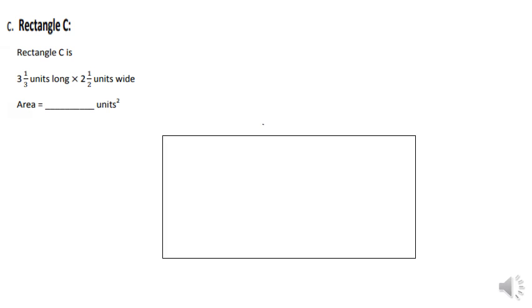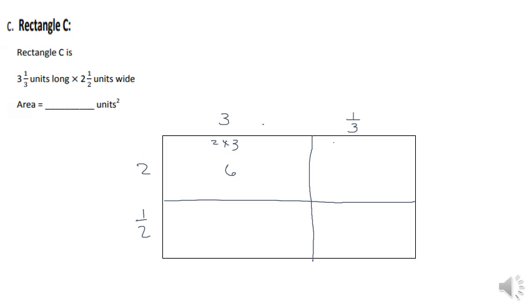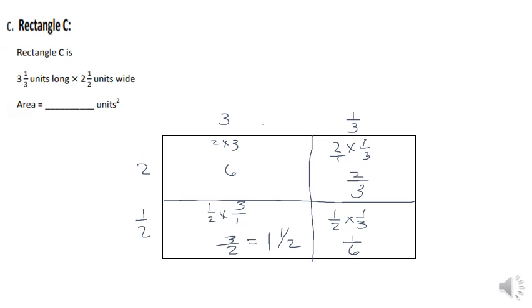On problem C, we split the rectangle with dimensions three and one-third units by two and one-half units. The first part is two times three, which is six. The second part is two times one-third, which is two-thirds. The third part is one-half times three, which is three halves, equal to one and one-half. The last part is one-half times one-third, which gives us one-sixth. Adding up, we have six, two-thirds, one-sixth, and one and one-half.